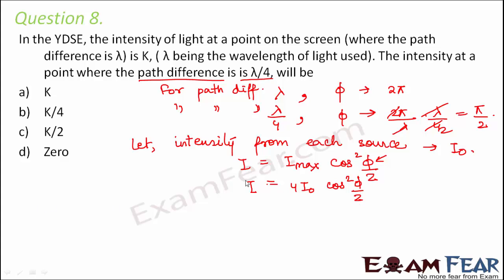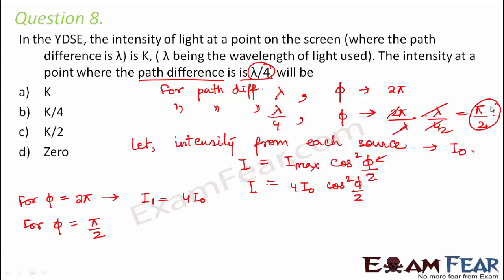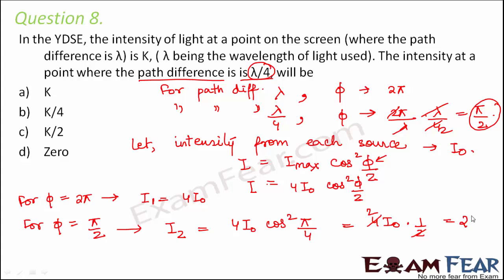We see that intensity is maximum when φ = 2π, giving I_max = 4I₀. Now when φ = π/2 — corresponding to path difference λ/4 — the intensity is 4I₀ cos²(π/4). Since cos(π/4) = 1/√2, squaring gives 1/2, so the intensity is 2I₀.